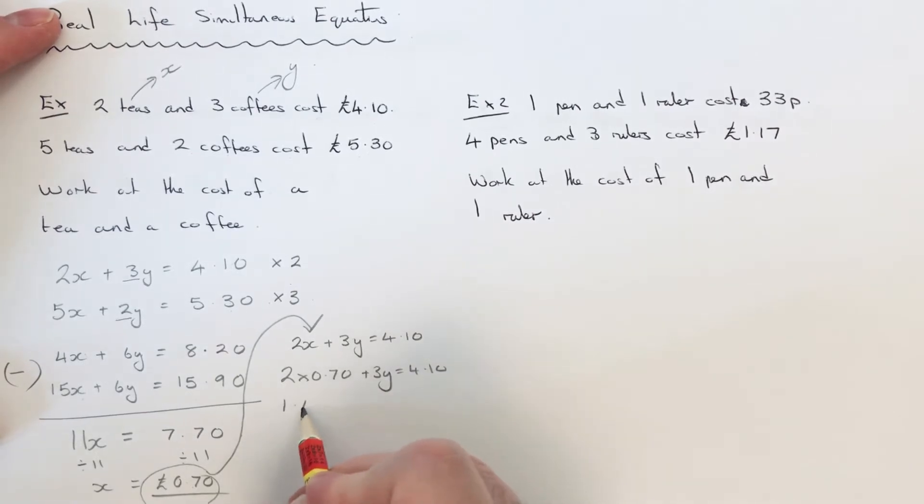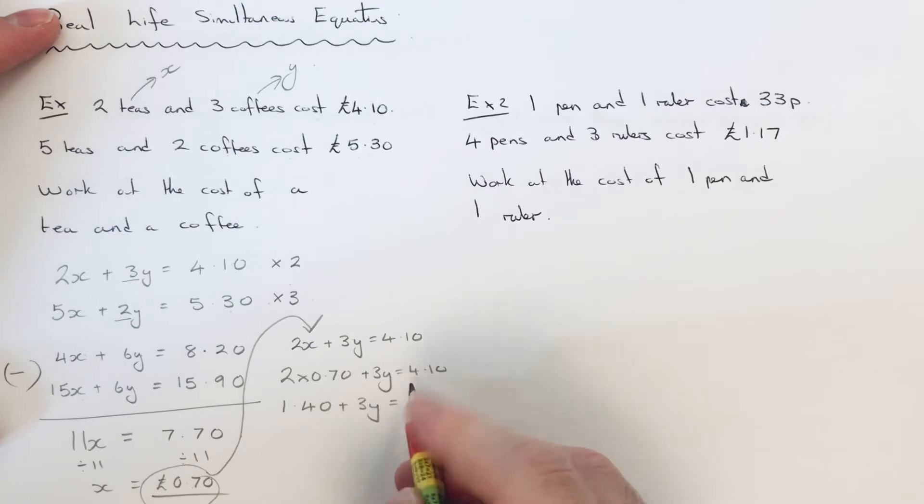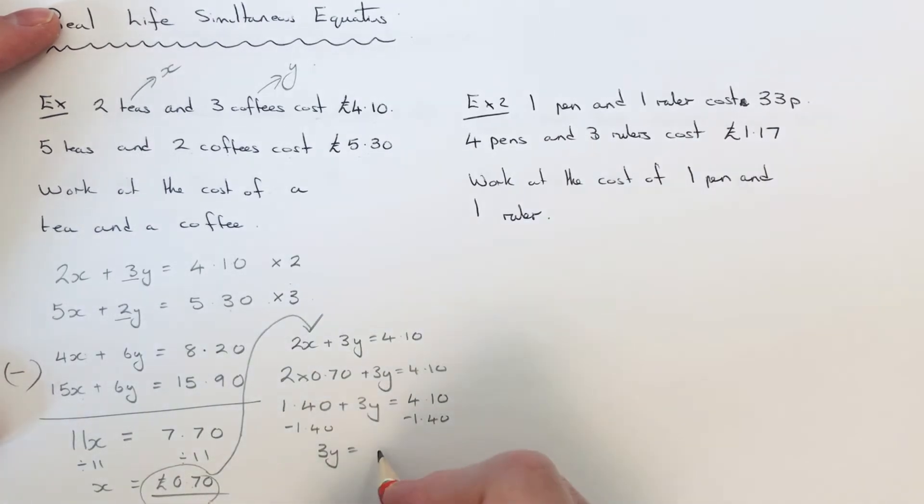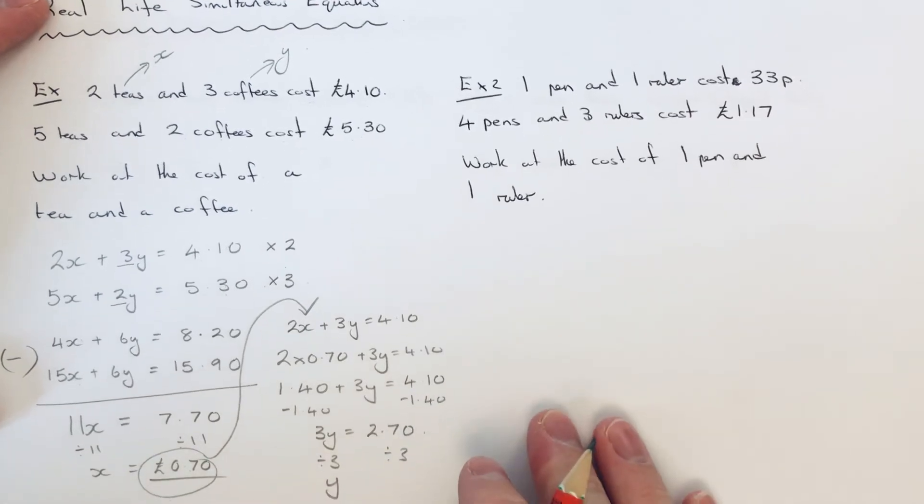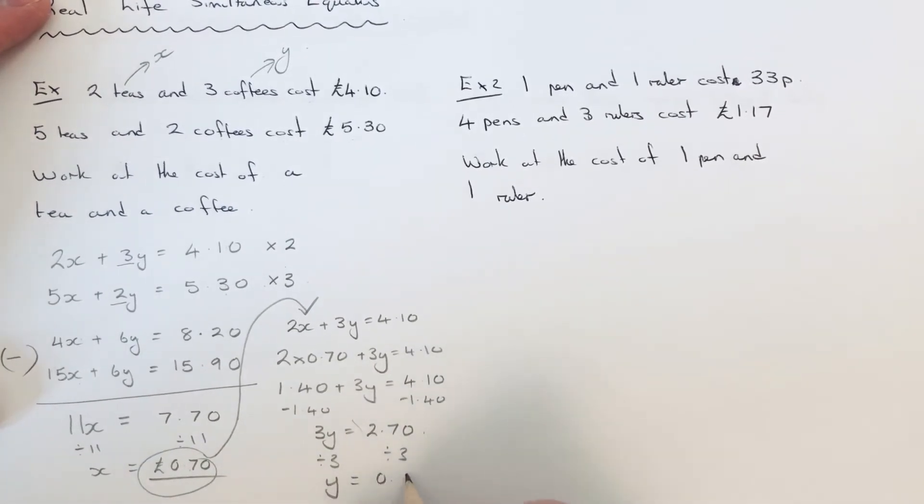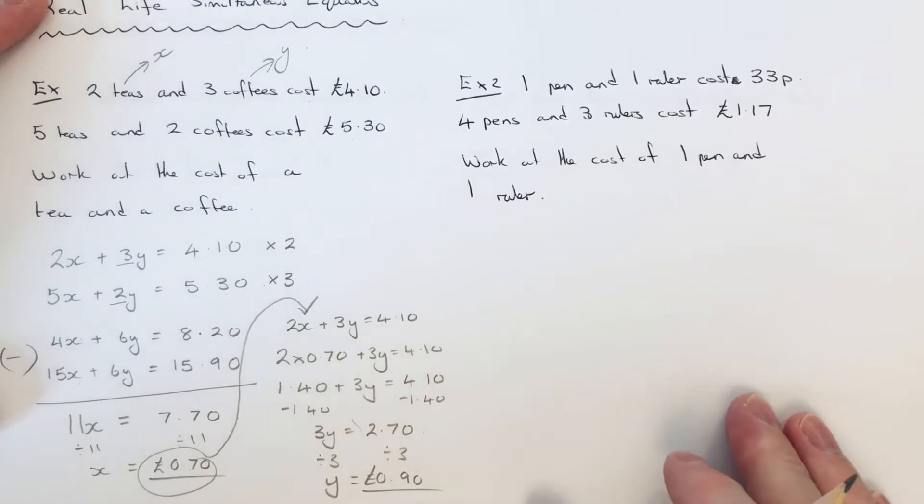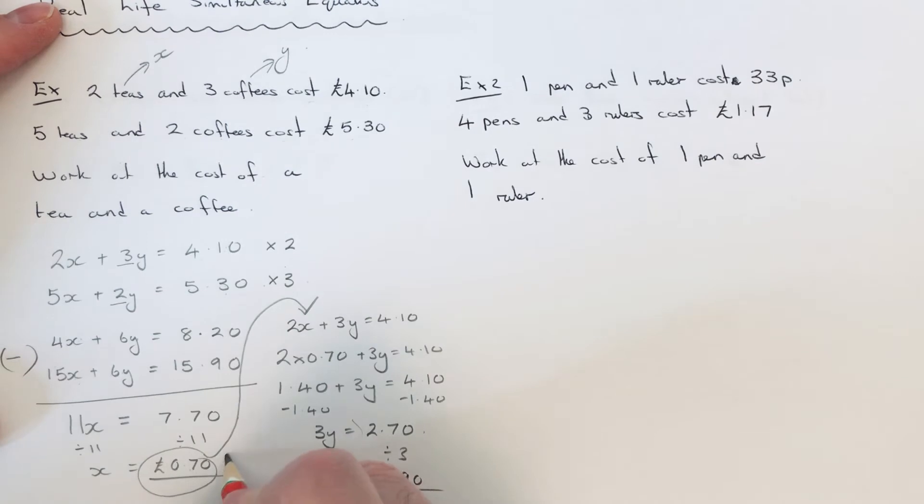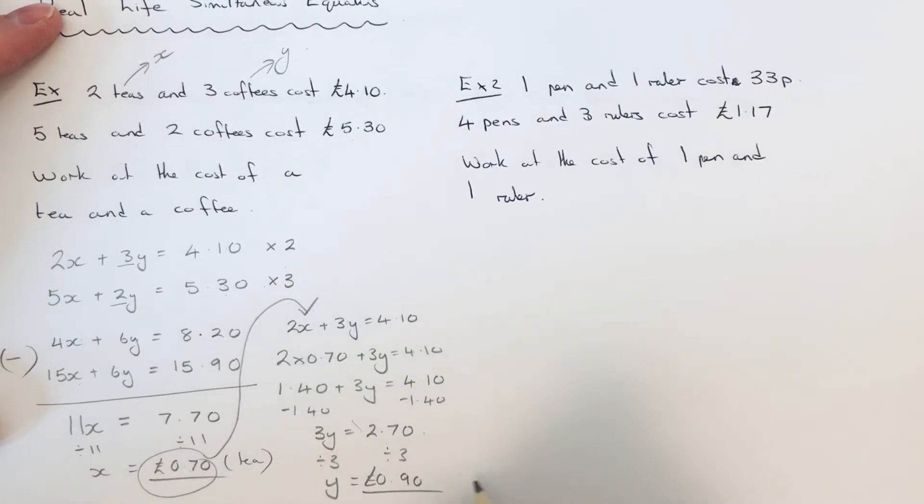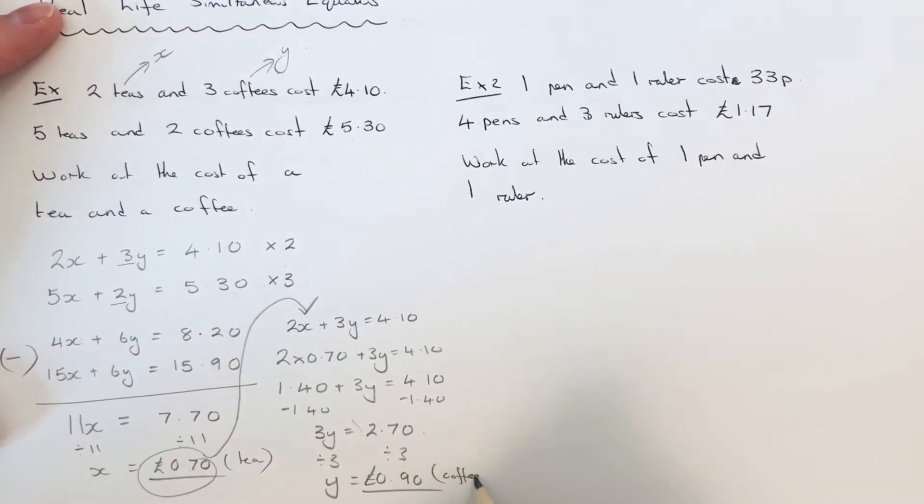So that will be £1.40. So we just need to solve this equation now. So if we take £1.40 off both sides, that will give us 3y equals £2.70. And then divide by 3 because y is being multiplied by 3. So that will give us y as 0.90. So 90p. So our tea is 70p and our coffee is 90p.